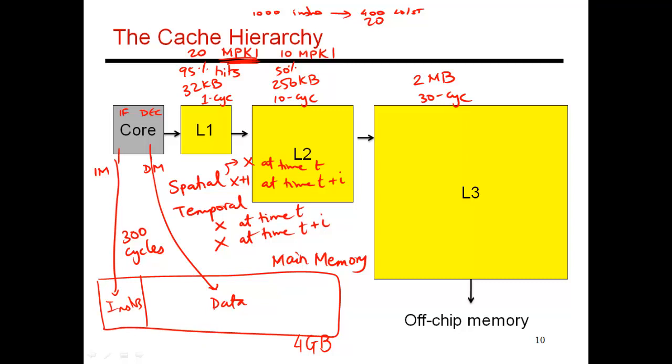And now, out of the 10 requests that show up at the L3, again, maybe five of them are serviced and five of them are misses. So the L3 is going to filter out even more of the accesses. And only five of the accesses escape the L3 and finally have to go to off-chip memory, which I said, which is the 300 cycle access.